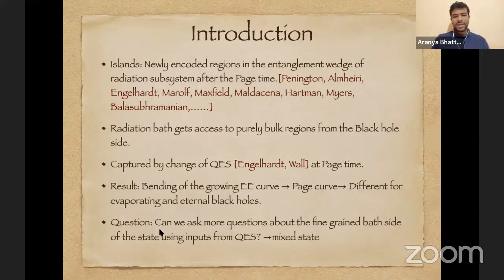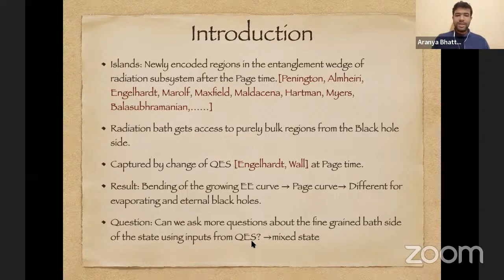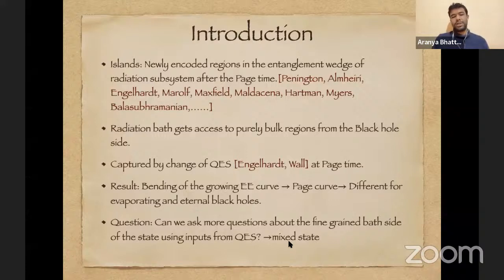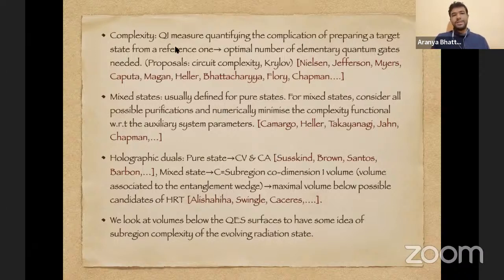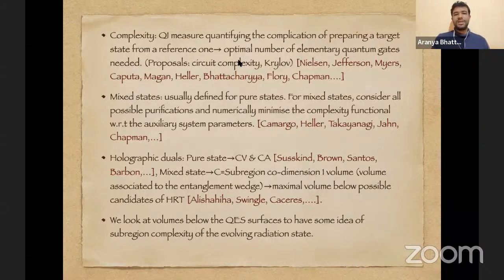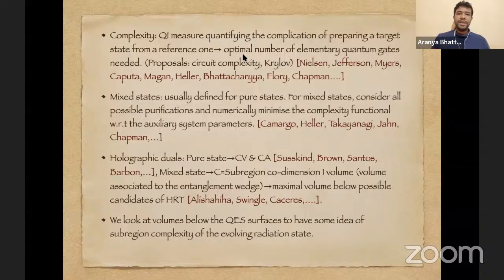We want to ask whether we can know more about the fine-grained bath-side state using inputs from the quantum extremal surface. The radiation plus black hole forms a pure state, so concentrating on the bath (radiation) side gives a mixed state — we are looking at the evolution of a mixed state. We study complexity, which is a quantum information measure quantifying the complication of preparing a target state from a reference state. In circuit complexity one computes the optimal number of elementary quantum gates needed.